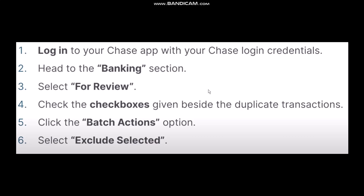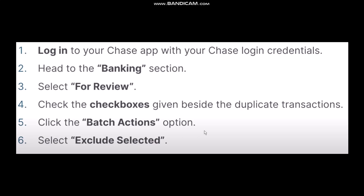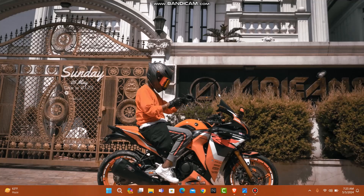Once you select 'For Review', check the checkboxes beside the duplicate transactions. Once you're done with that, click the 'Batch Actions' option, then select 'Exclude Selected', and your transactions will be hidden.